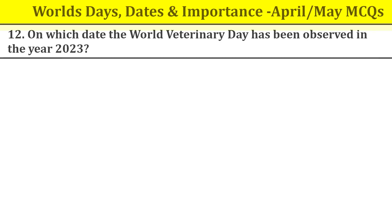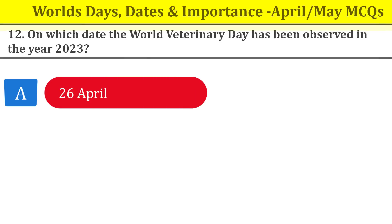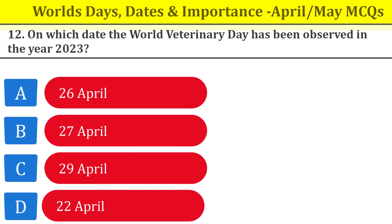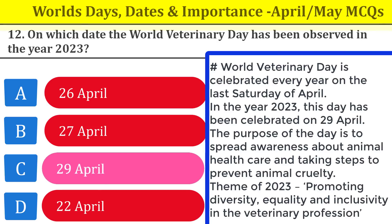Question number twelve: on which date is World Veterinary Day observed? It is observed on 29th April. This day is celebrated to spread awareness about animal health care and to take steps to prevent animal cruelty. The theme of 2023 is 'Promoting Diversity, Equality, and Inclusivity in the Veterinary Profession.'